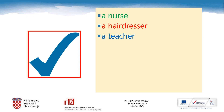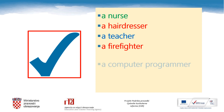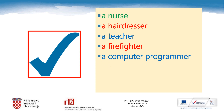Number four is a firefighter — it is a person who puts out fires. Number five is a computer programmer — it is a person who fixes computers. Number six is a scientist — it is a person who does scientific research. And number seven is a waiter — it is a person who serves food or drinks in a restaurant or a coffee shop.